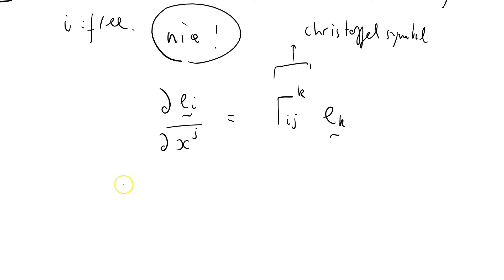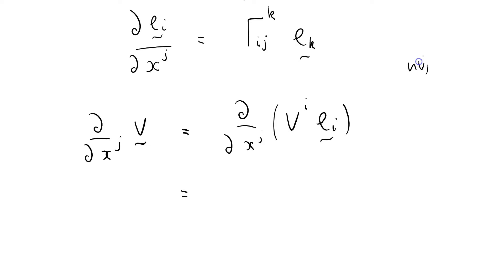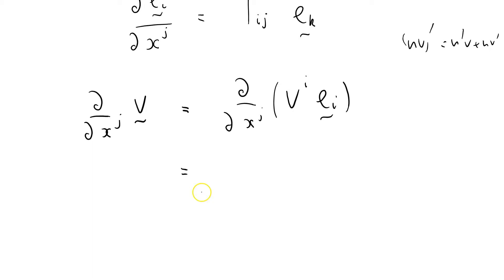Now I'm going to show you how to use them. Let's just say we want to take a differential with respect to x^j of a vector v. Well that's just d/dx^j of v^i e_i equals, and all I'm doing here is using uv' = u'v + uv'.